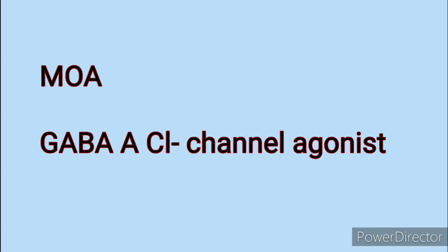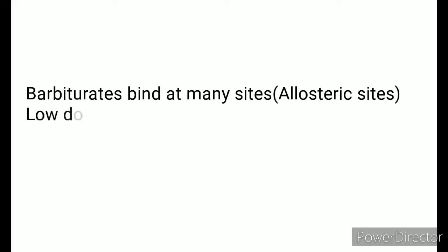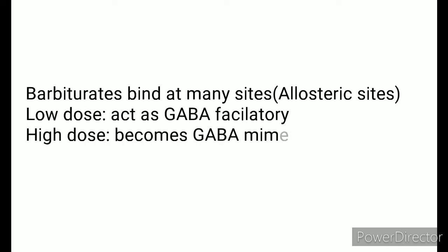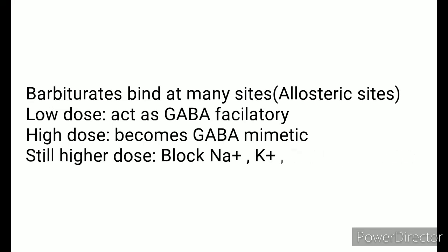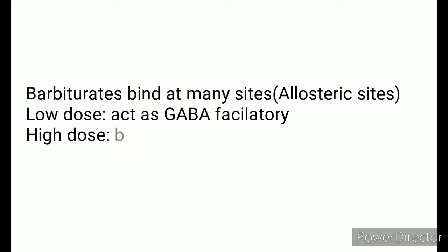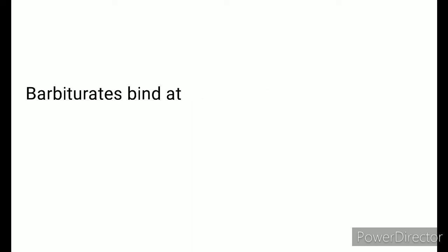Regarding the mechanism of action, barbiturates are GABA-A chloride channel agonists. Barbiturates bind to allosteric sites. At low doses, they are GABAergic mimetics — the GABA chloride channel directly opens and the duration of opening increases. At high doses, they block sodium, potassium, and calcium channels and inhibit glutamate receptors, becoming non-specific, which makes them more dangerous.